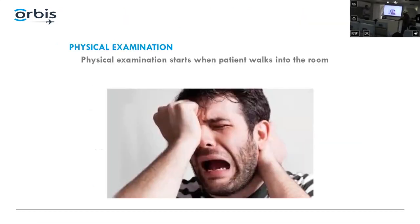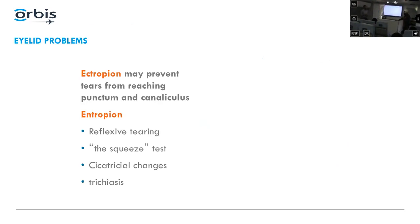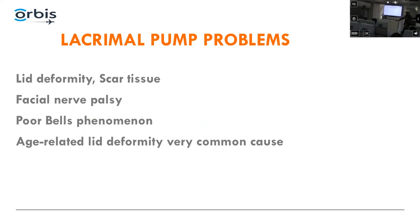Physical examination starts when a tearing patient walks into your office. Look at everything: the cornea, conjunctiva, eyelids, eyelashes, and the lacrimal system. Ectropion, entropion, and trichiasis are common causes — trachoma is a very common cause of tearing, entropion, and ocular surface problems. Also look for lacrimal pump problems: anything preventing the eyelid from blinking — eyelid deformity, scar tissue, facial nerve palsy, and age-related ectropion or entropion.